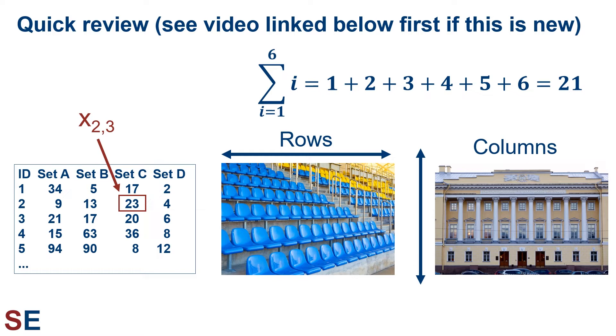The rows are the horizontal sets of numbers, and the columns are the vertical ones. In this data table, since we'll ignore the left-hand column because it's just data labels, it has four columns and five rows.